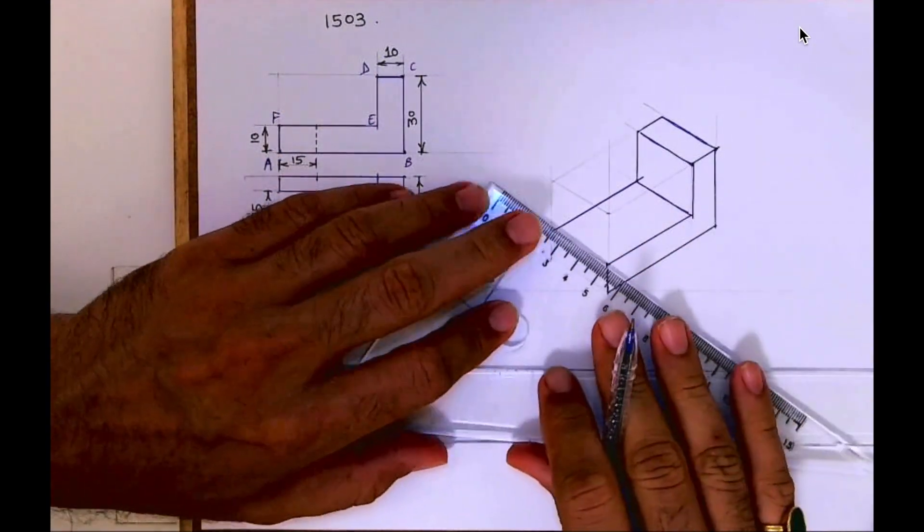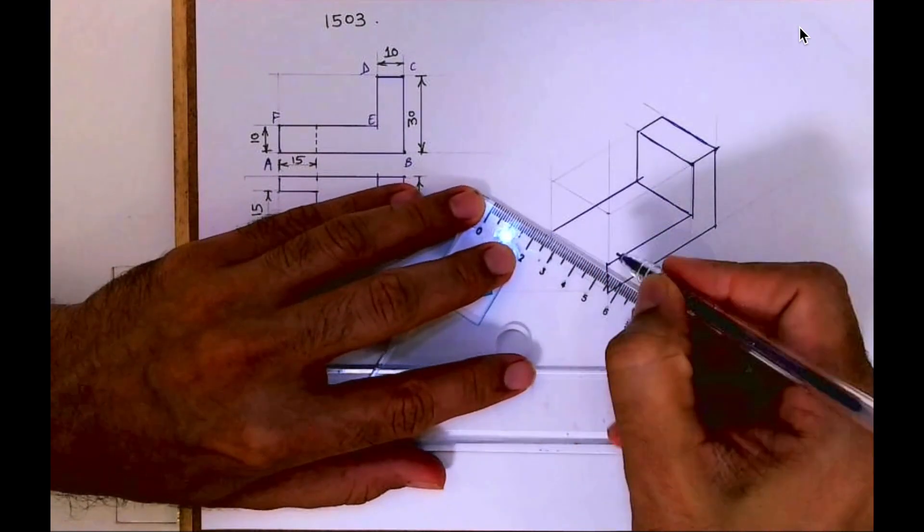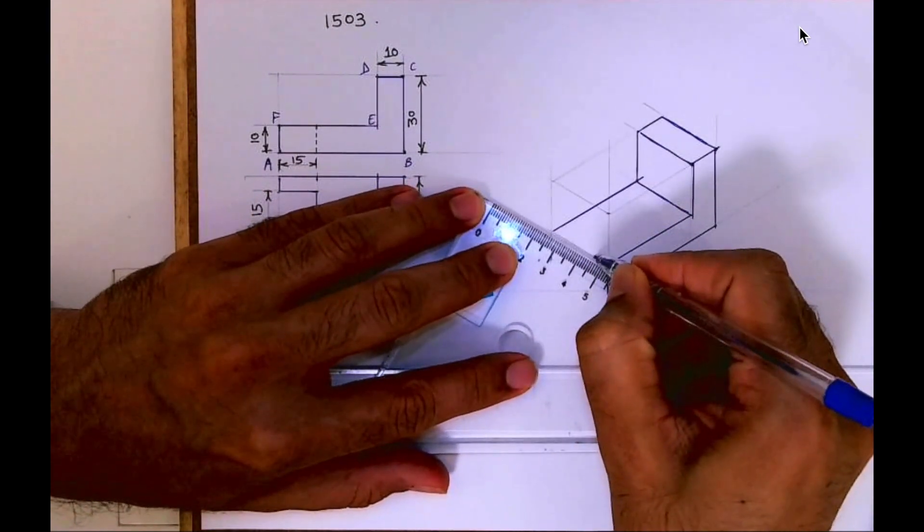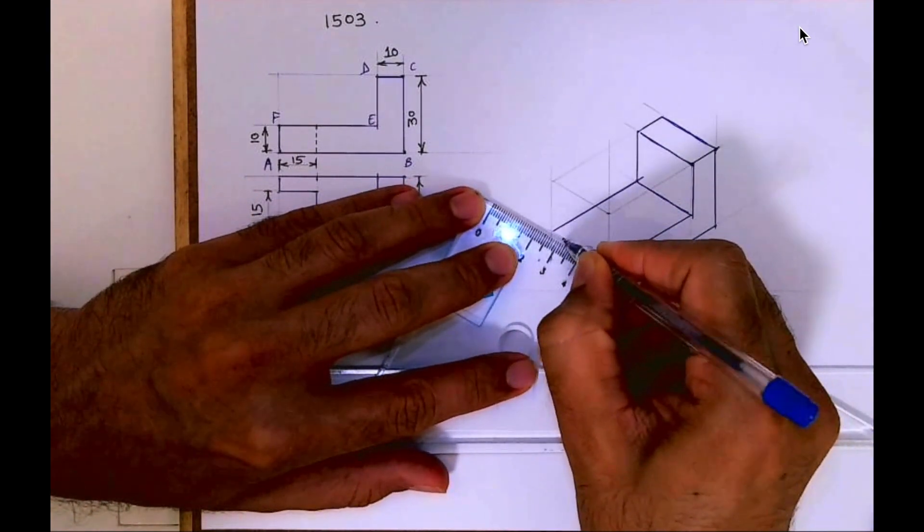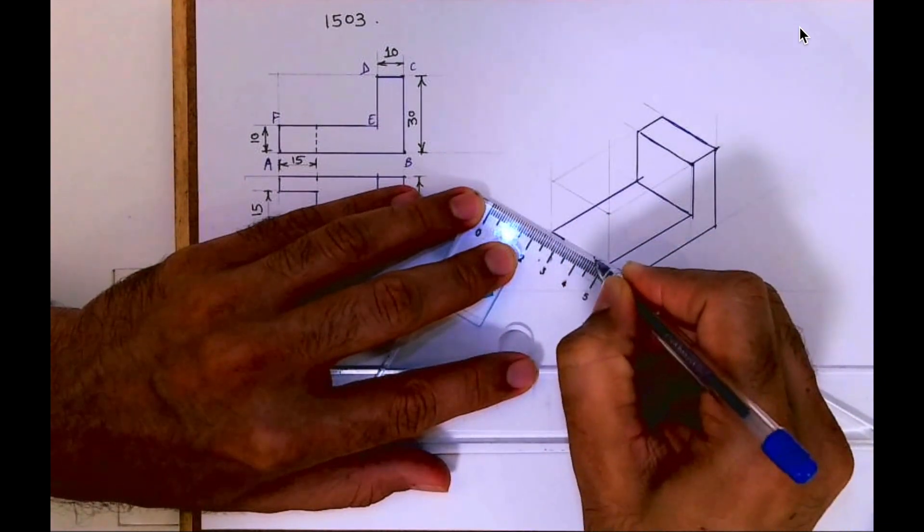25 minus 15 is 10. So 5 on both sides. I will leave 5 from here and 5 from here, and I will join this.